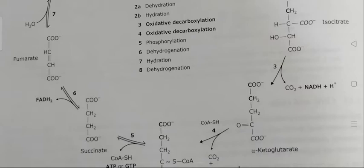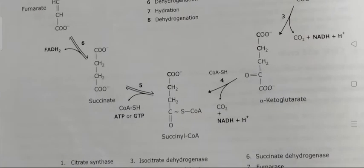The fourth reaction is a second oxidative decarboxylation, resulting in the formation of succinyl coenzyme A from alpha-ketoglutarate. CO2 is released, coupled with the formation of NADH and a high-energy thioester compound bound to coenzyme A.